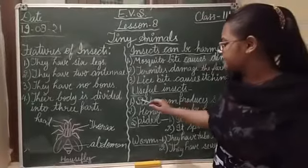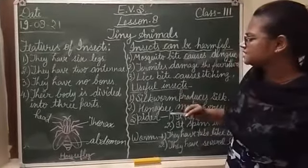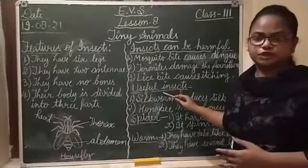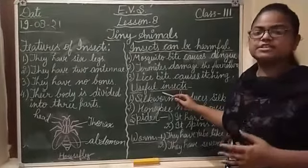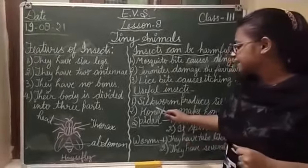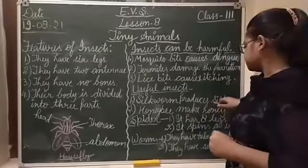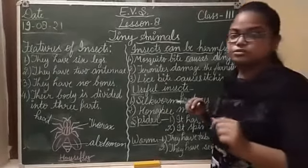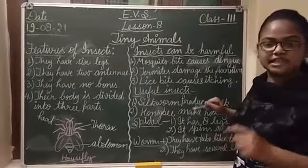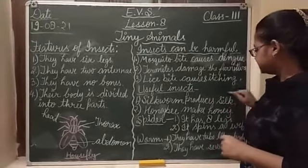Next, useful insects. Insects are also useful to us. Some insects are very useful for us. Like silkworm produces silk — you know that from the cocoon of silkworm we get silk.